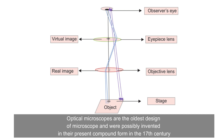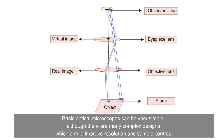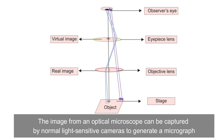Optical microscopes are the oldest design of microscope and were possibly invented in their present compound form in the 17th century. Basic optical microscopes can be very simple, although there are many complex designs which aim to improve resolution and sample contrast. The image from an optical microscope can be captured by normal light-sensitive cameras to generate a micrograph.